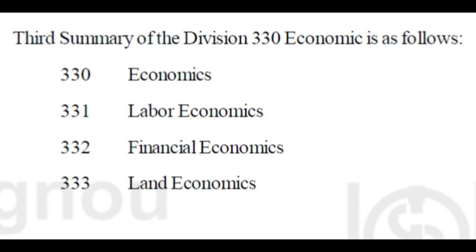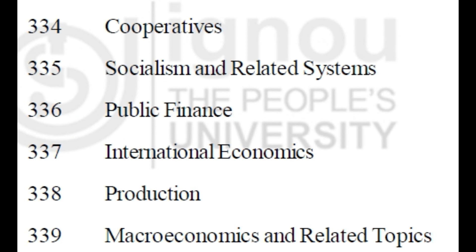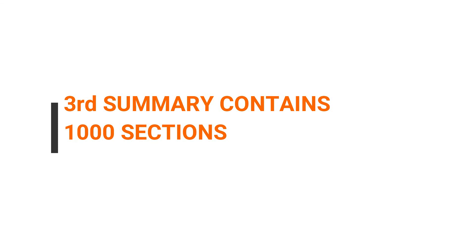The 2nd Summary consists of 100 Divisions. Each of these divisions is further divided into 10 parts called Sections, giving a total of 1000 Sections. For example, 330 for Economics is further divided: 330 Economics, 331 Labor Economics, 332 Financial Economics, and so on up to 339 Macroeconomics and related topics. This is called the 3rd Summary, consisting of 1000 sections.